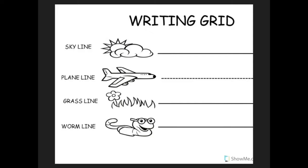V. V is a plain line slide letter. Put your pencil on the plain line, slide down to the grass line, and bounce back up. V, van, v. W. W is a plain line slide letter.